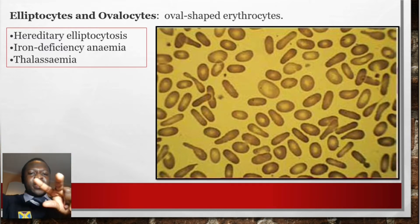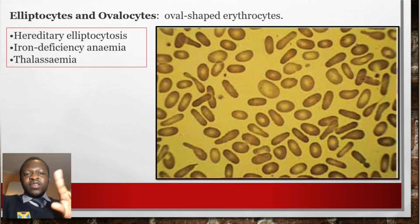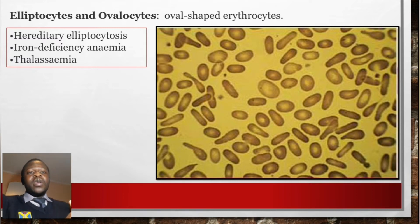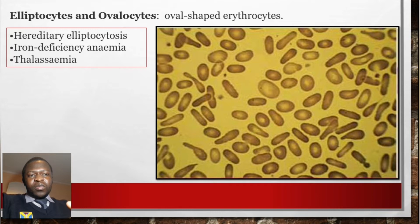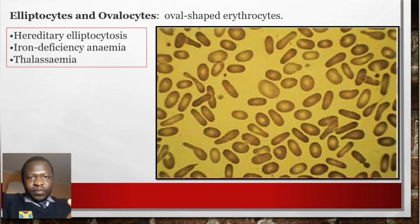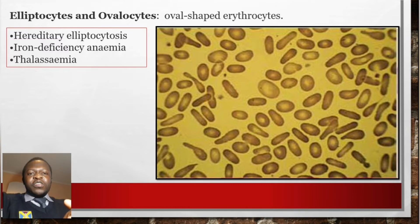Elliptocytes and ovalocytes are terms that can be used interchangeably. They refer to erythrocytes with an oval shape and are mainly associated with hereditary elliptocytosis, iron deficiency anemia, and some thalassemias.